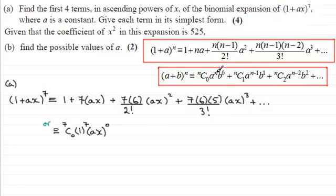Remember, when you're using this, always these two powers add up to n. So 7 and 0 add together to give the 7 here. We go on to the next term, it's ⁷C₁. We reduce the power on the 1 down to a 6 now, and increase the power on ax by 1, so it's ax to the power 1. And again, these two add up to 7.